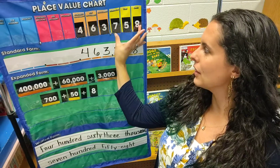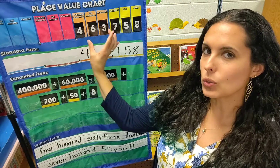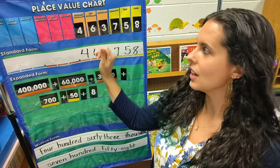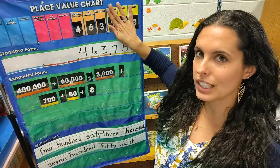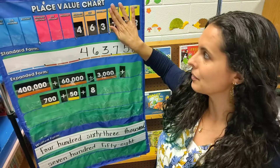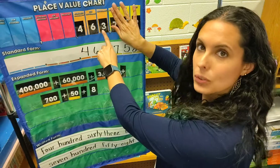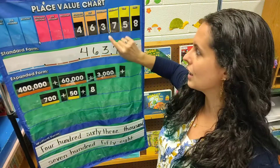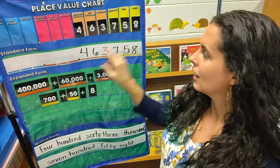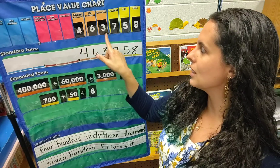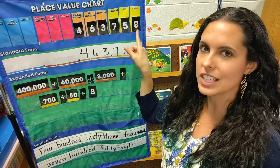This is your ones period, and this is your thousands period. When you read a number to the hundred thousands, you're actually going to read this part like you would read the regular ones period. So it will go four hundred sixty-three. Now remember when you get to the comma, you say thousand. Four hundred sixty-three thousand seven hundred fifty-eight.